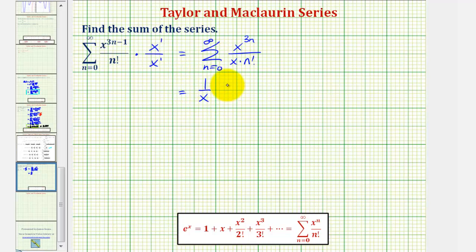and that would give us 1 over x times the summation from n equals zero to infinity of, now for x raised to the power of 3n,